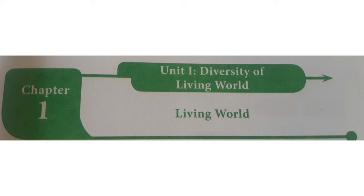Diversity of Living World. What is diversity? A diverse form of living organisms are found in different types of habitats. Diverse form means different varieties of organisms found in different types of habitats. What is habitat? The place where organisms live or grow is a habitat for that particular organism. The habitat may be ocean, freshwater, forest, mountain or desert. This is the definition for diversity.